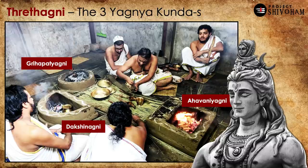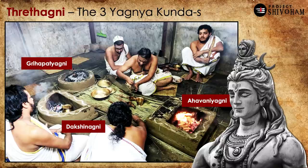Ahavaniya Agni, which is in the square-shaped fire altar as shown here, is used for Vedic rituals. Grahapathya, which is in the circular shape, is used for household purposes like cooking. And Dakshinagni, which is in the semicircle shape, is used as a token of respect towards the ancestors, or Pitru Devatas. So these three fires together are called Tretagni, and Rudra is worshipped as the Lord of Three Fires, Trikagni Kalaya.